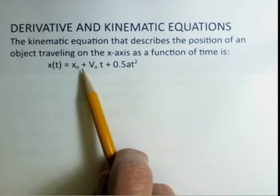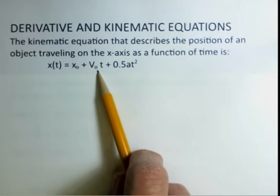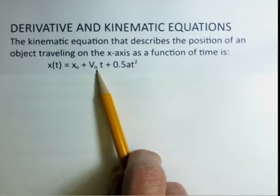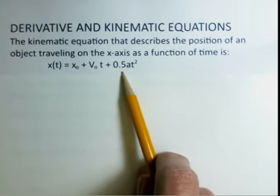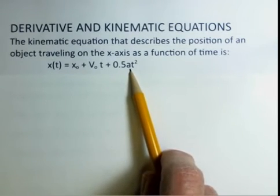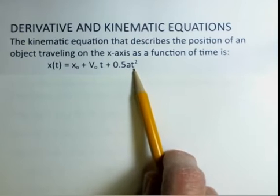It's x of t, which is equal to some starting position plus the starting velocity in the x direction multiplied by the time that this motion occurs, plus one half the acceleration in the x direction multiplied by the time squared.